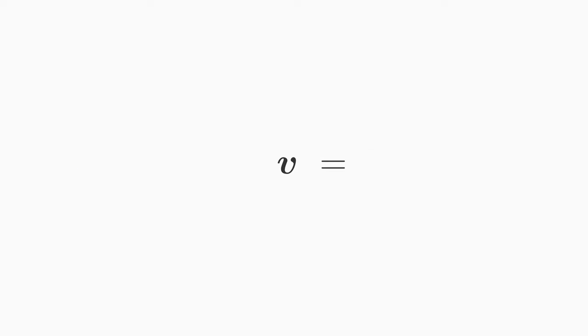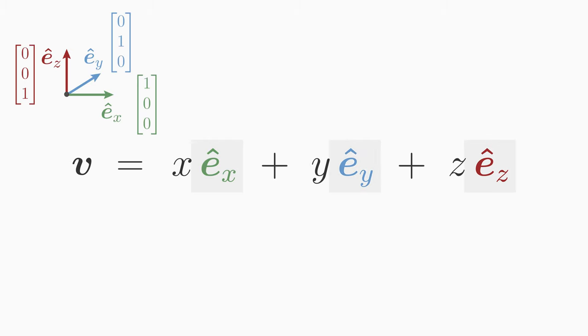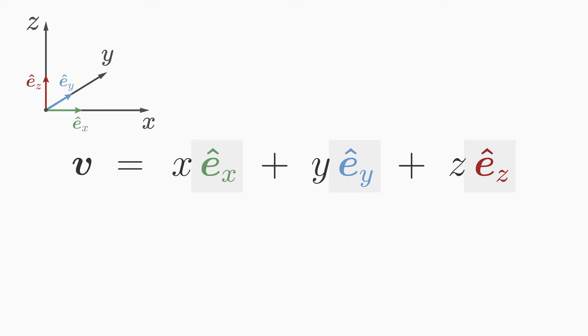Consider a three-dimensional vector v with the components x, y, and z. You can represent this vector v in an orthonormal basis as follows. Here, ex, ey, and ez are three basis vectors which are orthogonal to each other and normalized. In this case, they span an orthogonal three-dimensional coordinate system.